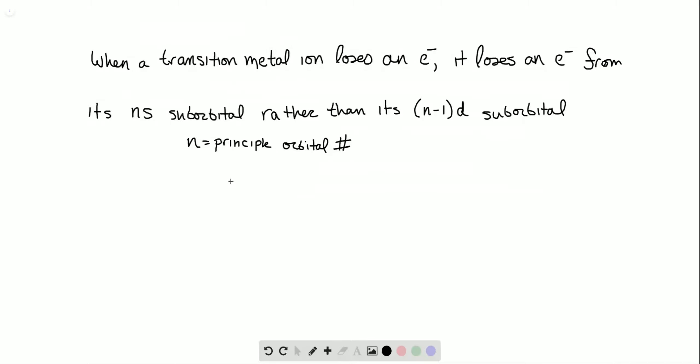This might be counterintuitive, because if we look at an example such as vanadium, vanadium has a condensed electron configuration of [Ar]4s²3d³. We would assume that when vanadium forms its +2 ion,